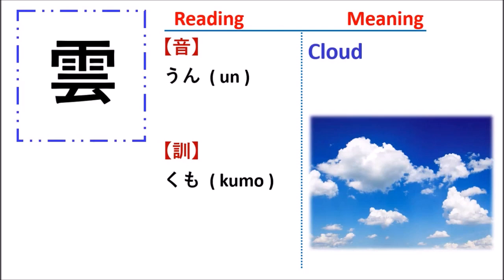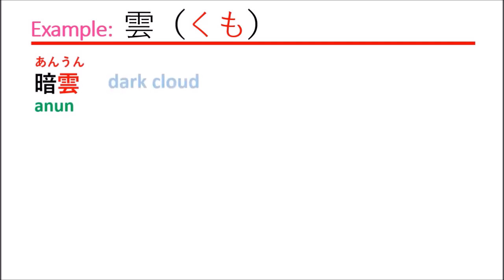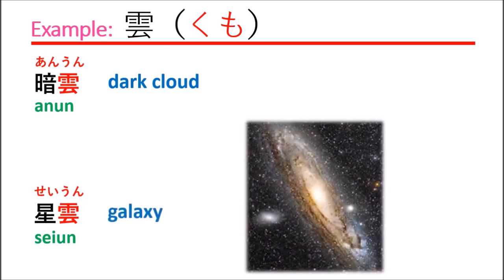Let's see some examples of how to use the kanji for kumo. The first example means dark cloud. The next is 星雲 (seaun), meaning galaxy.